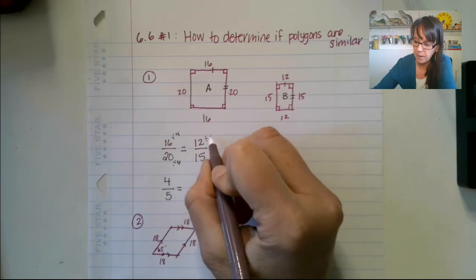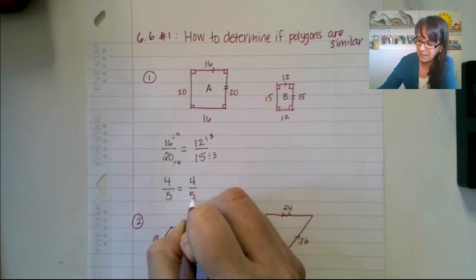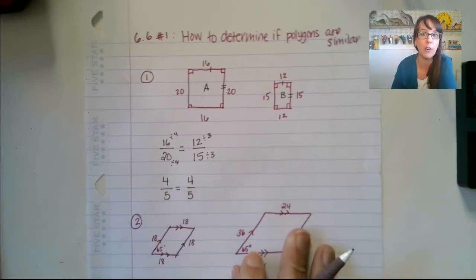If we divide this by 3, it took me a second there, 3 on the top and the bottom, we would have 4 over 5. So these ratios are the same.